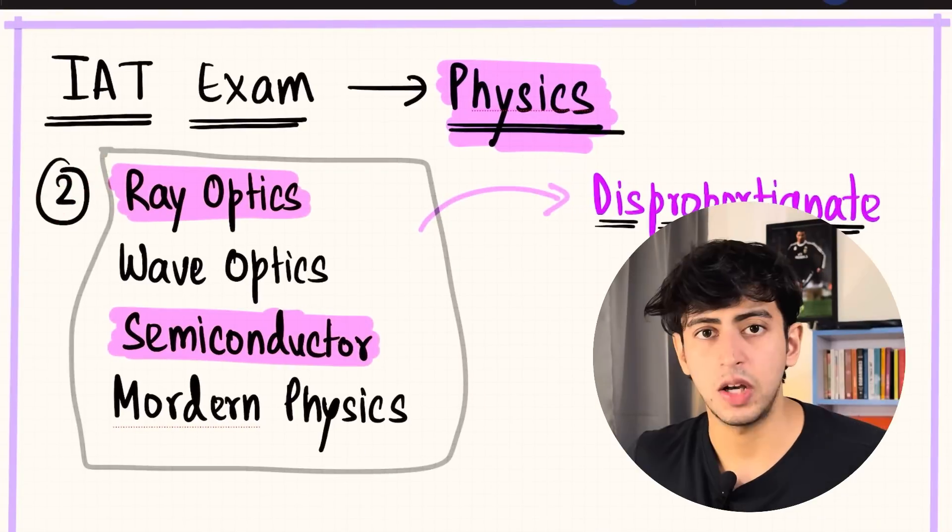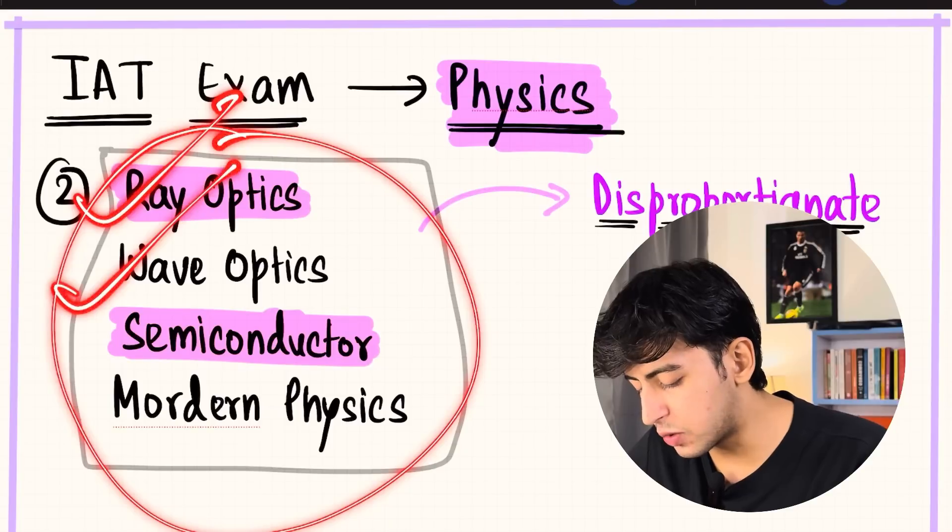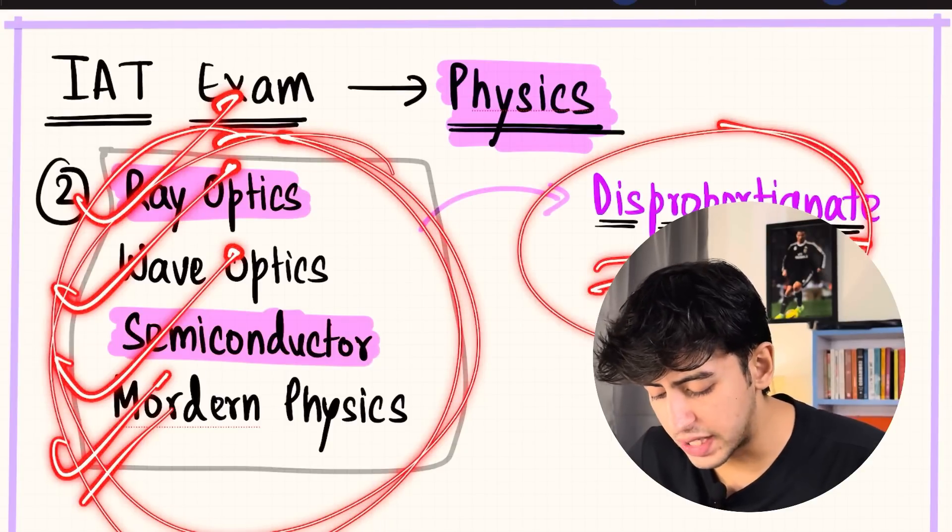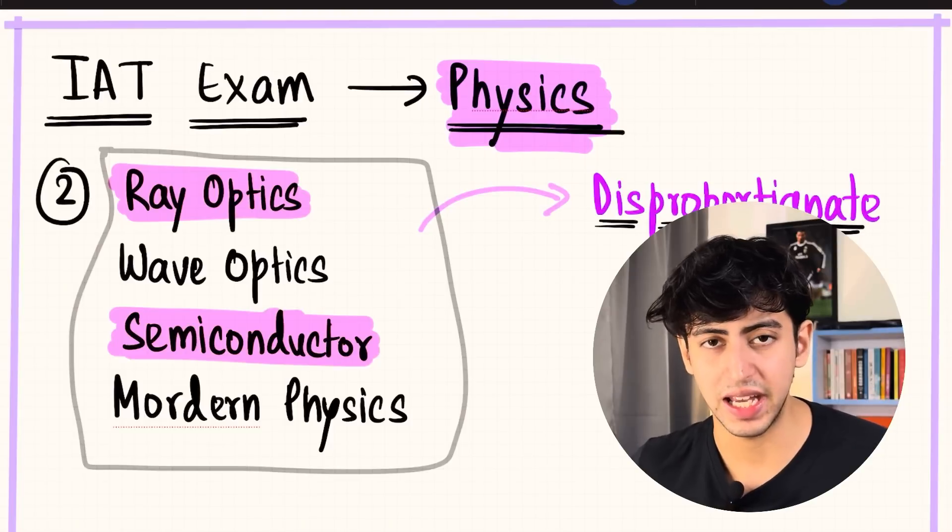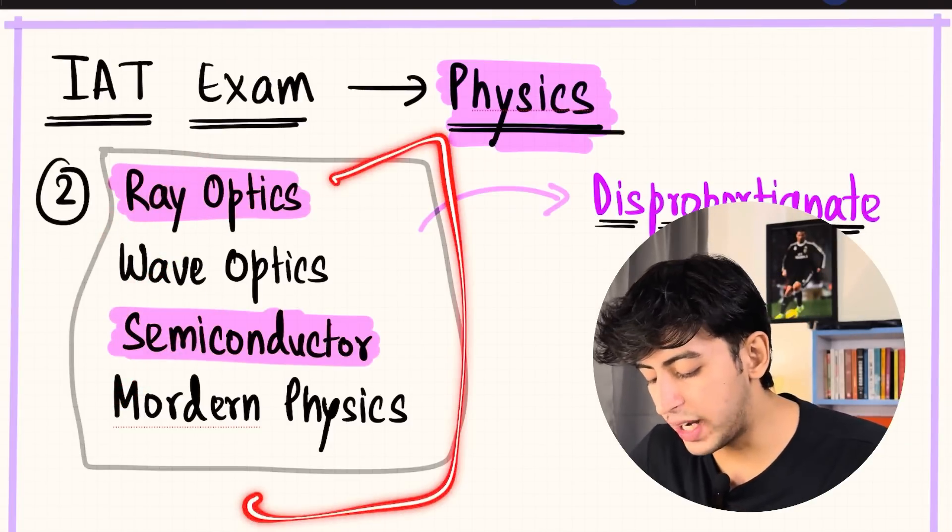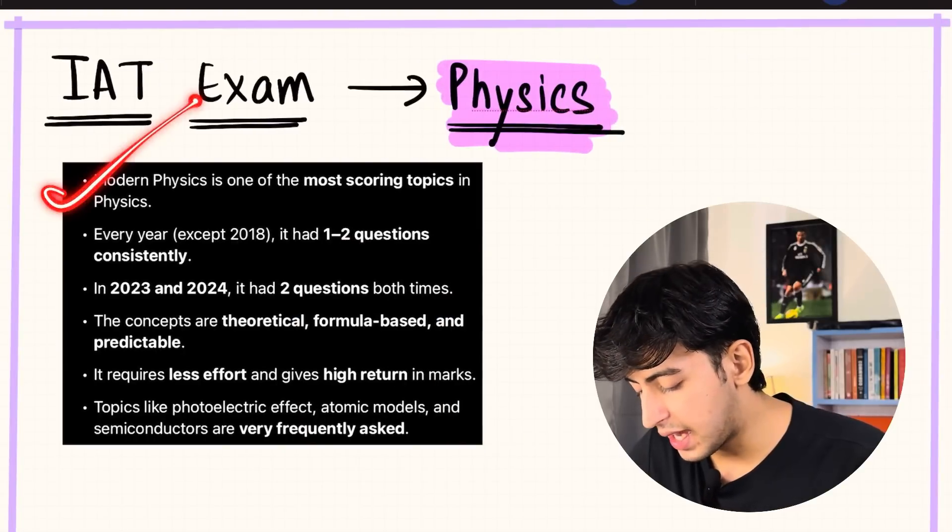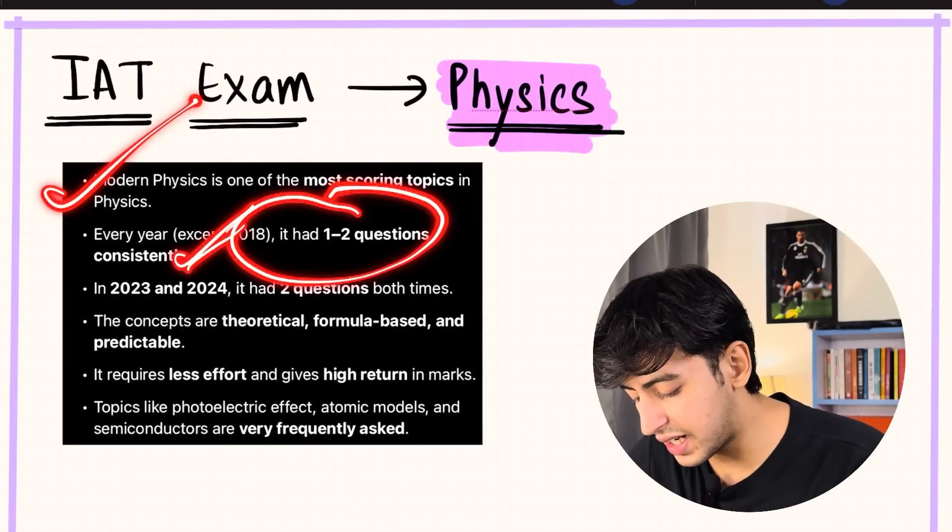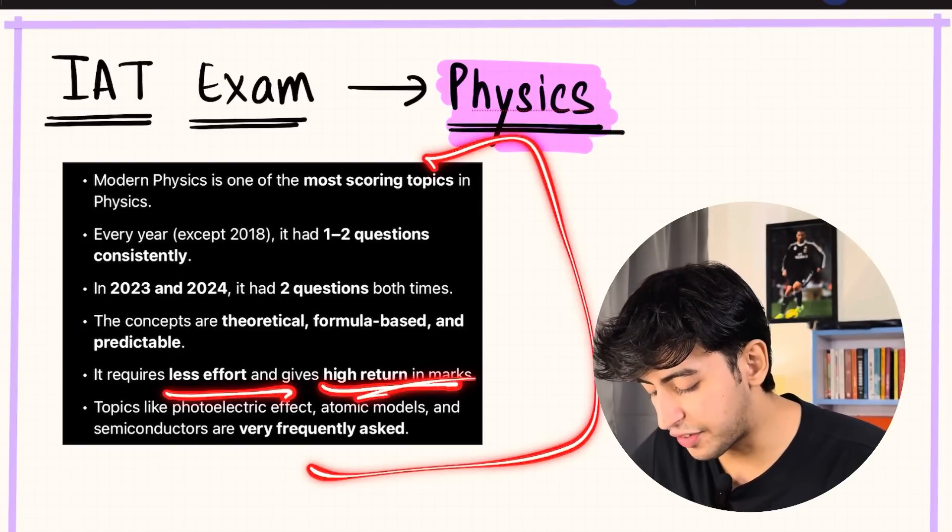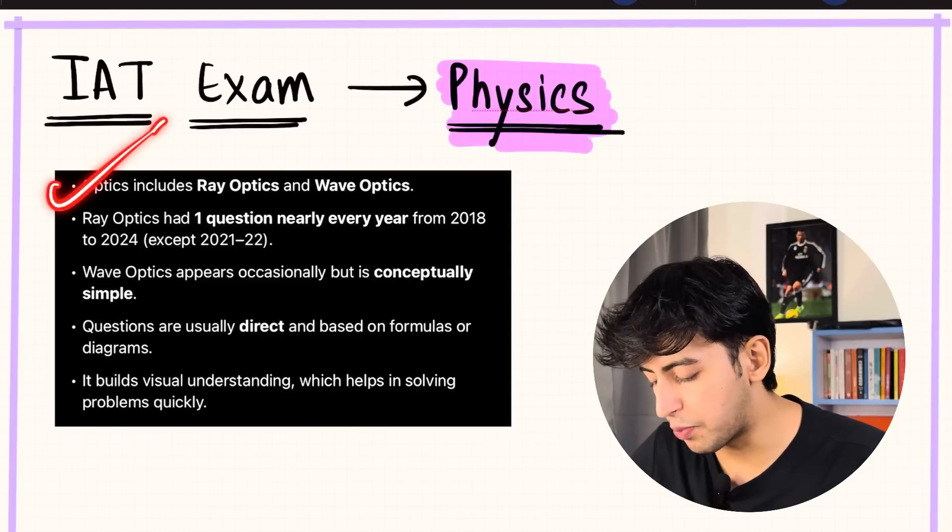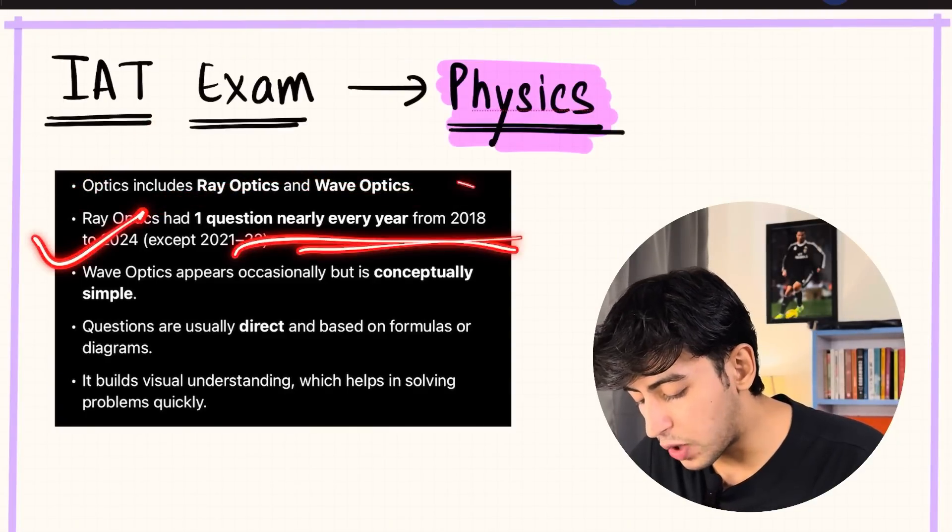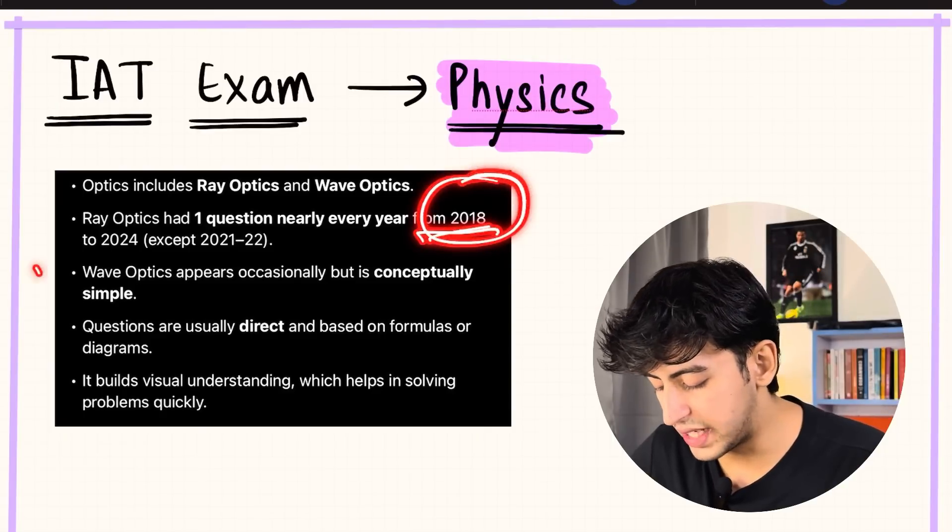Coming to the second most important topic, which is a cluster including ray optics, wave optics, semiconductors, and modern physics. These have disproportionately high weightage in the IAT examination, and the best part is they don't have any prerequisites—you can prepare them independently. Talking about modern physics, except 2018, every year one to two questions have come. Less effort, high returns chapter, very very important. Ray optics has a question every year except 2018.